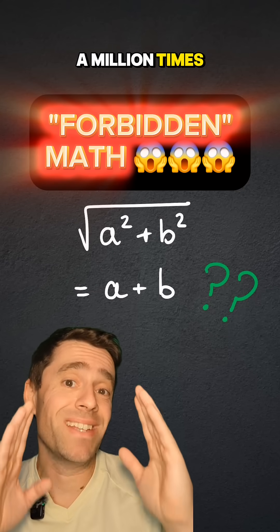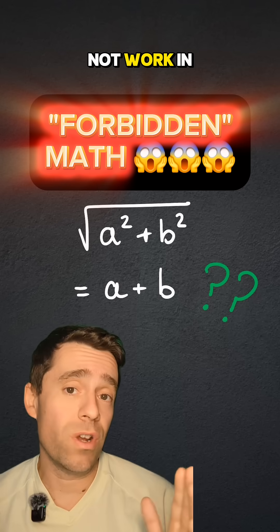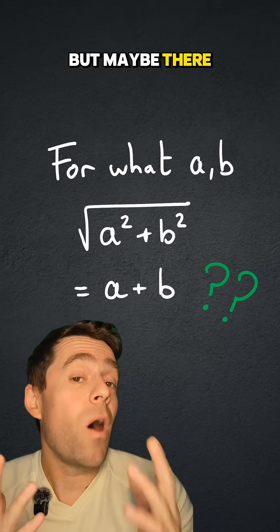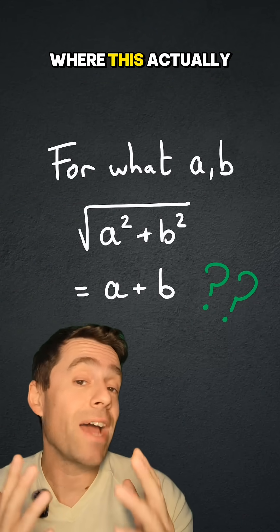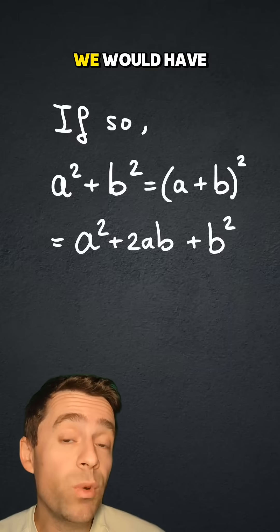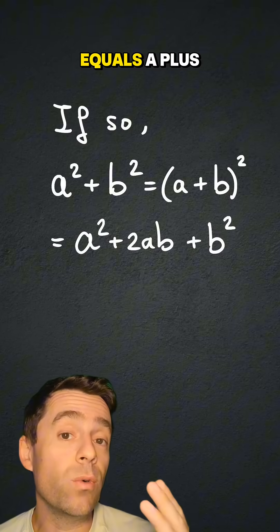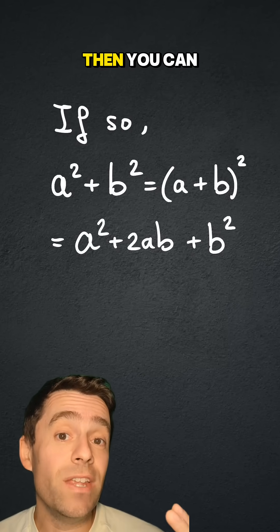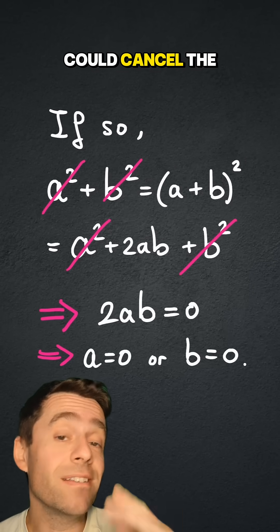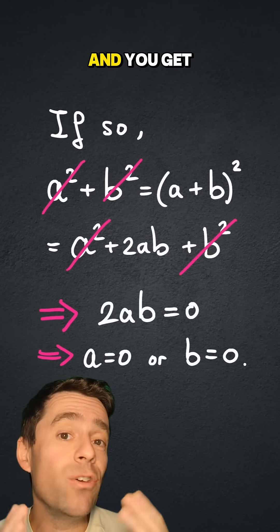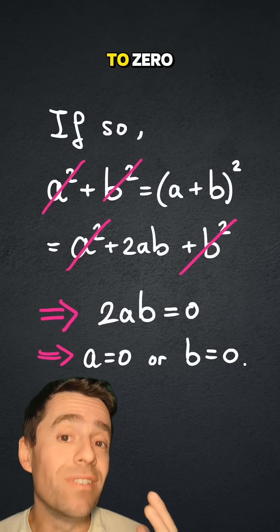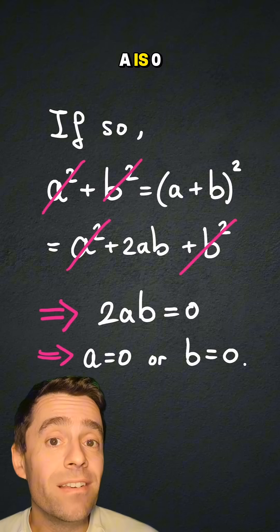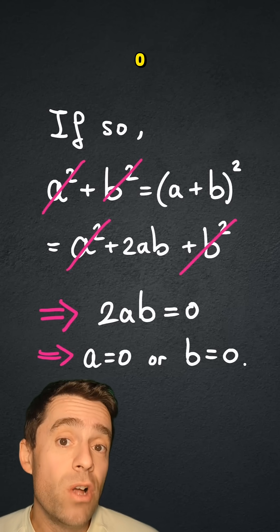Students are told a million times that this does not work in general, but maybe there are some numbers where this actually works. If so, we would have that a squared plus b squared equals a plus b squared, and if you expand that, then you can see that you could cancel the a squared and the b squared, and you get that 2ab is equal to 0, which means that a is 0 or b is 0.